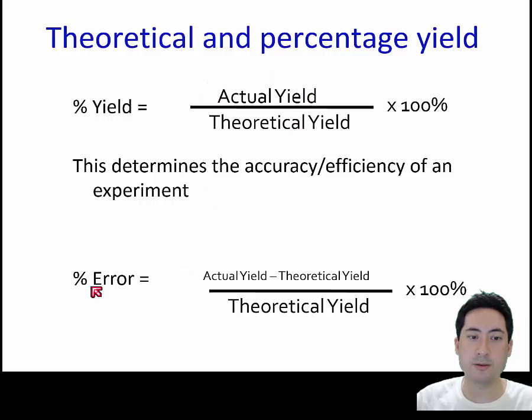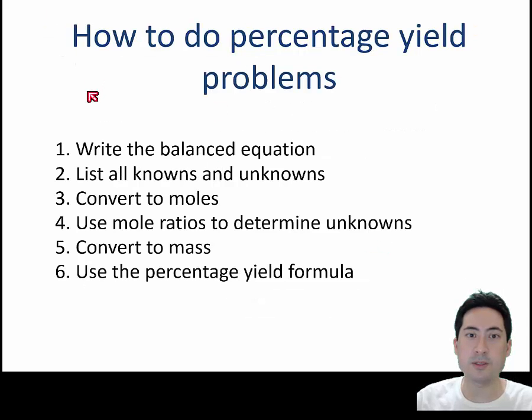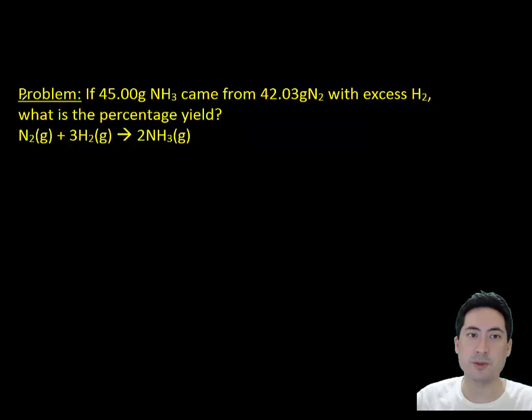We call that percent yield, or we can use percent error as a similar calculation. So how do we do this? We just use the balanced equation and work out the theoretical - how much we should have got - and then we can compare it with that formula.